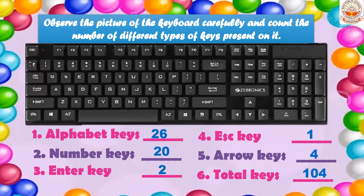A QWERTY standard keyboard has 104 keys. QWERTY means the first row of alphabet keys is arranged in the order Q, W, E, R, T, Y. So a standard QWERTY keyboard will have 104 keys.